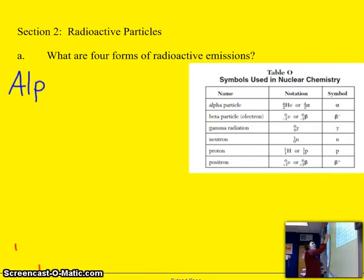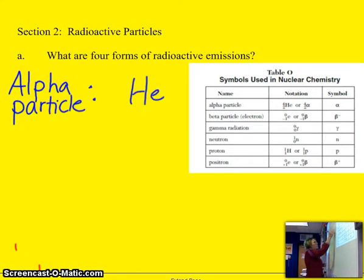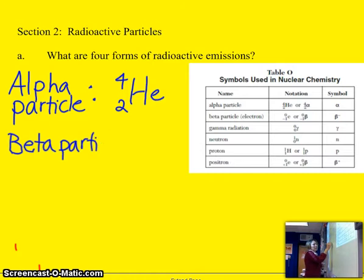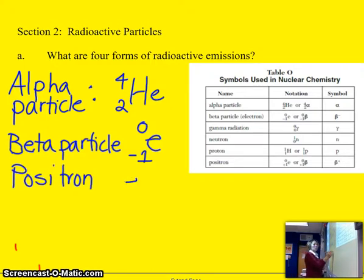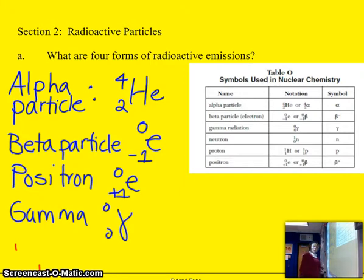The four particles are an alpha particle, and we give the alpha particle the symbol He-4-2, a beta particle, which has the symbol E-0-negative-1. A beta particle is simply a high-speed electron. There's a positron, which is E-0-plus-1. And then there's a gamma ray, which is a wave of energy. It's massless and chargeless type of radiation.